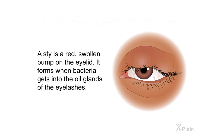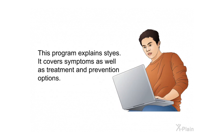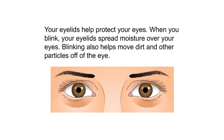A stye is a red swollen bump on the eyelid. It forms when bacteria gets into the oil glands of the eyelashes. Styes can be painful — they can cause your eyes to swell and become red. Self-care treatments at home will heal most styes, but some styes can cause more serious problems. This program explains styes, covering symptoms as well as treatment and prevention options.